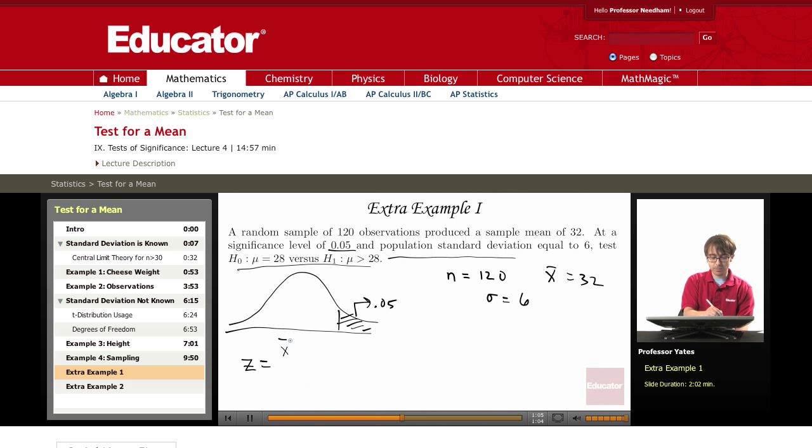So we have x bar minus mu divided by sigma over the square root of n. So I'm taking 32 minus 28 divided by 6 over the square root of 120. This actually gives me 7.30.